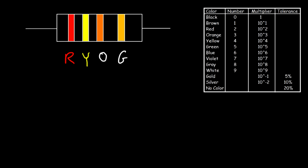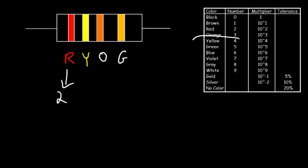So what you need to do is when you have the first color, which is red, look for the number in a table. Red corresponds to two — that's the first digit. The second color, yellow, correlates to the second digit, and based on the table, yellow is associated with four. So you can have two, four, or twenty-four.